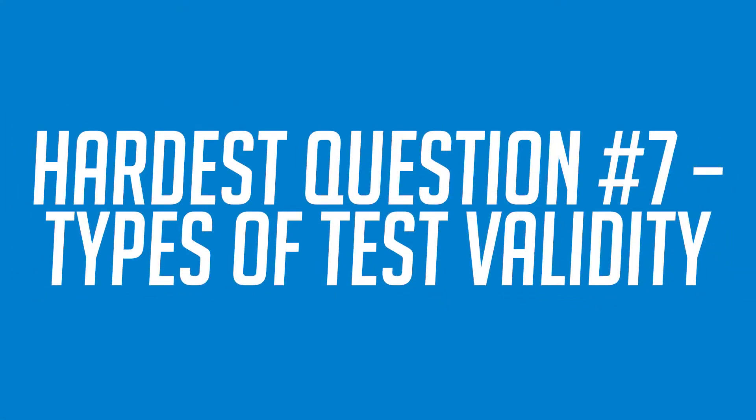Hardest question number seven, types of test validity. Athletic testing validity and reliability will definitely be on this test. You must know every type of validity and reliability metric and their specific definitions. Let's take another example.